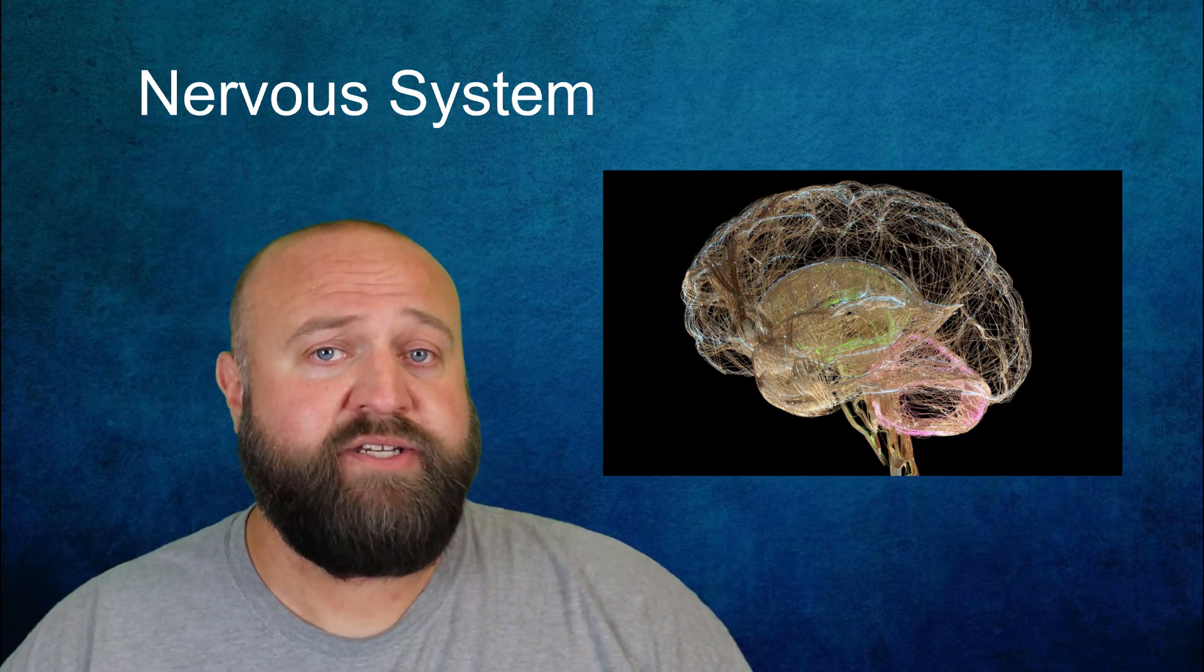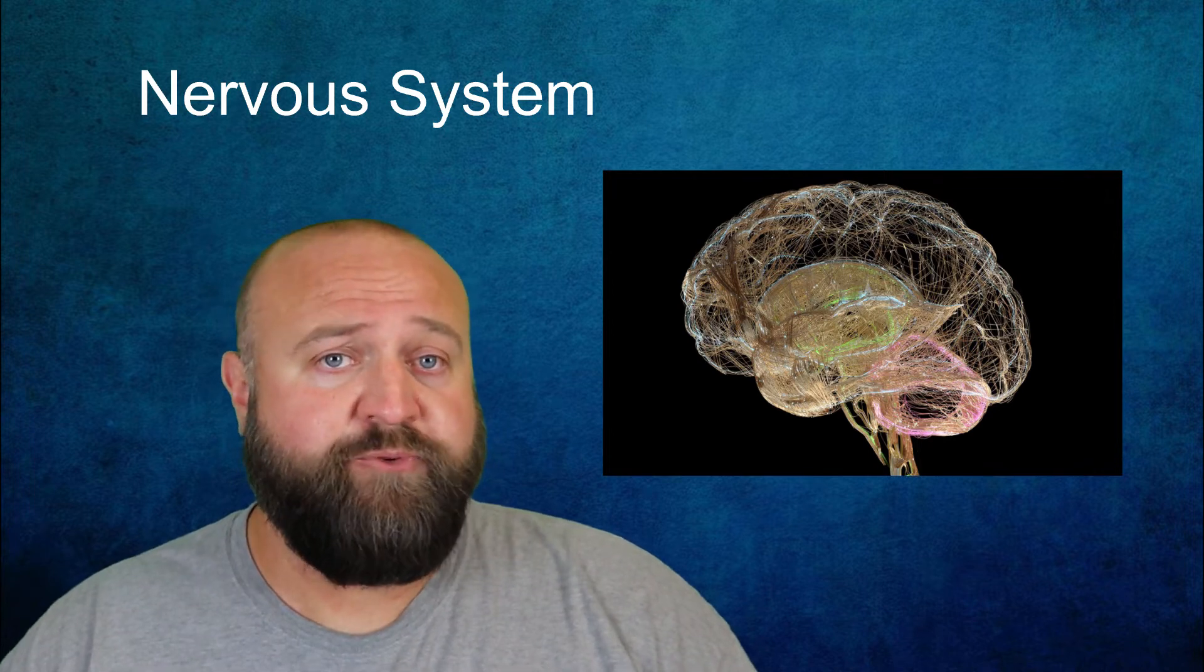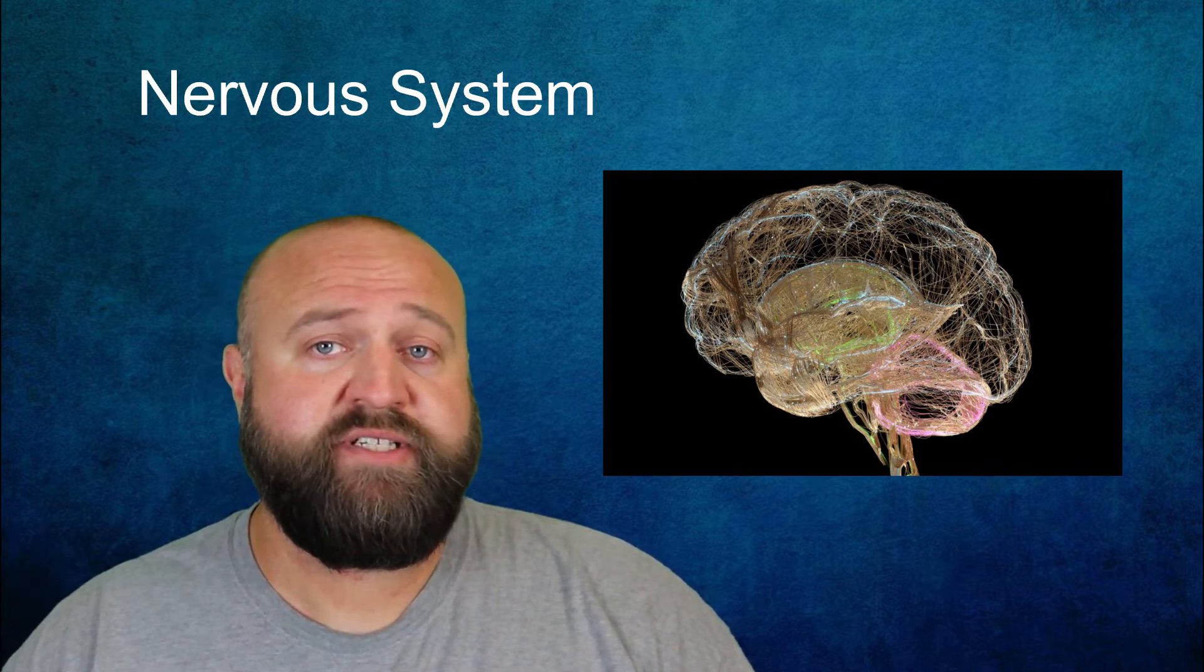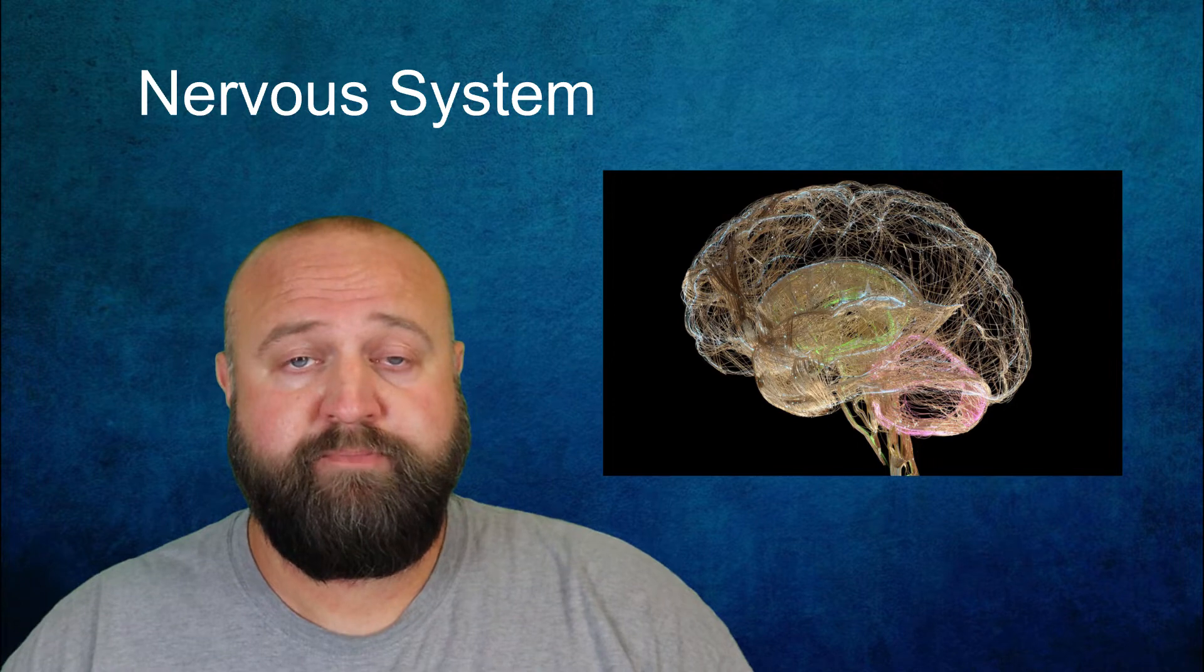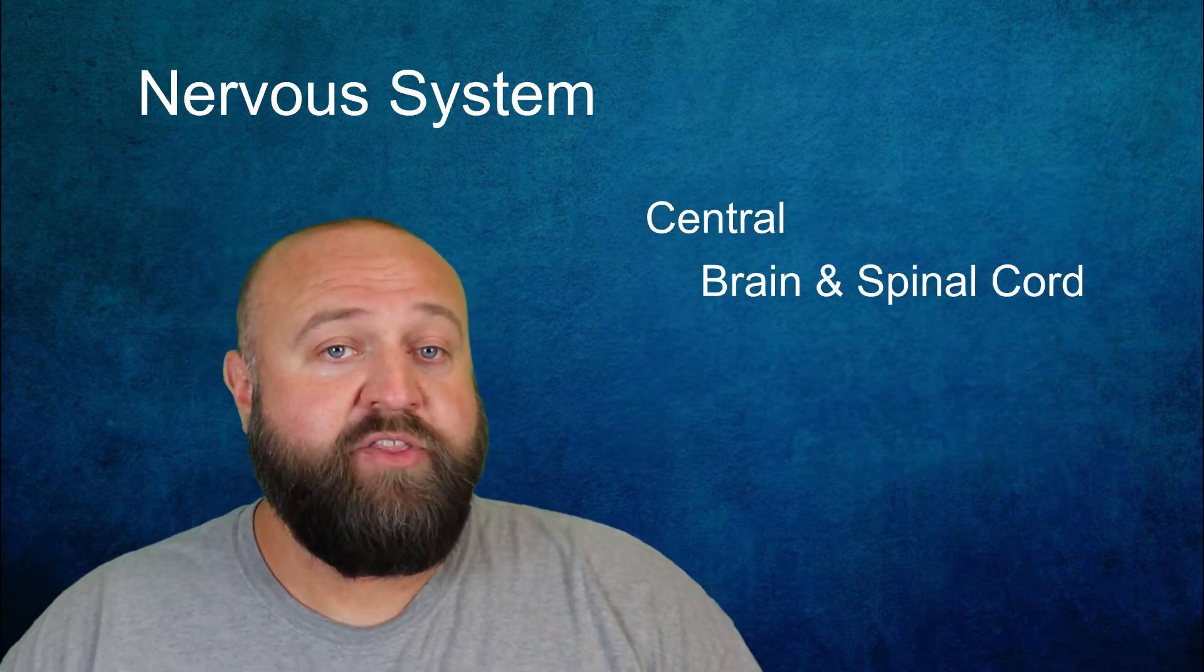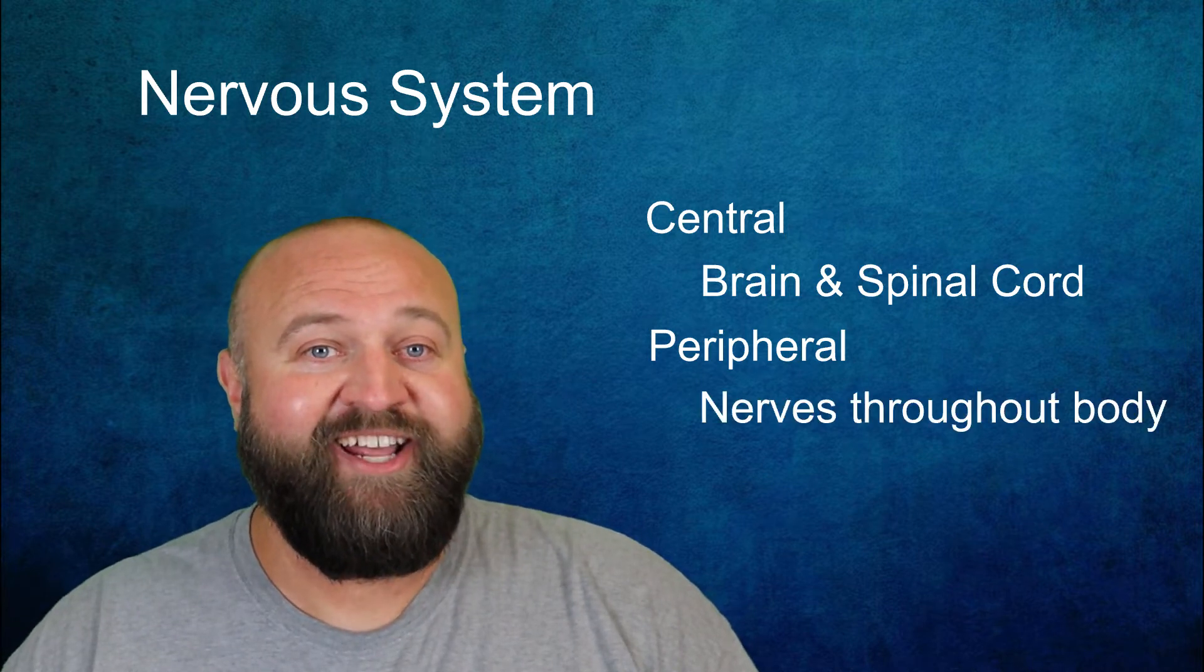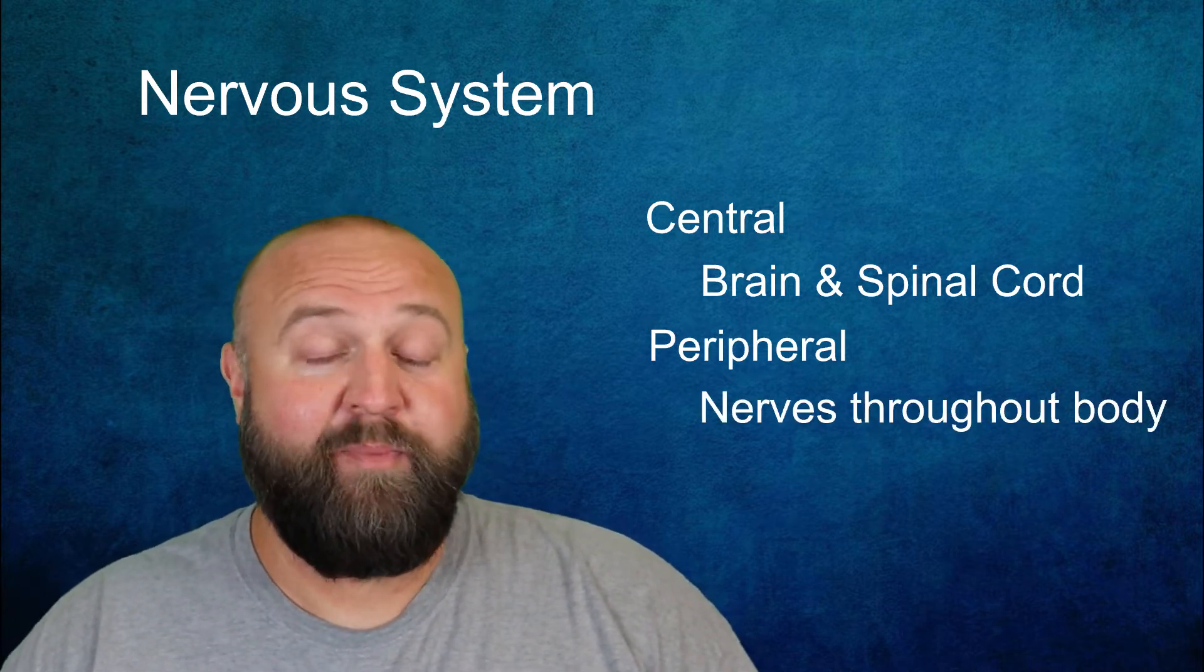The nervous system is divided up into a couple different subsystems or divisions. The first division is between the central nervous system and the peripheral nervous system. The central nervous system includes your brain and spinal cord. The peripheral nervous system includes all the nerves that branch off from your brain and spinal cord and connect throughout your body.